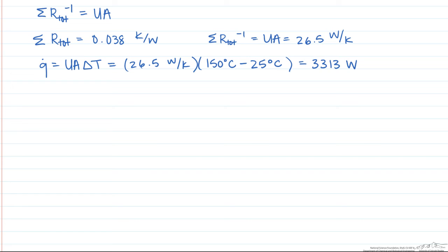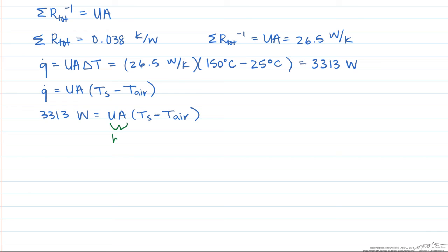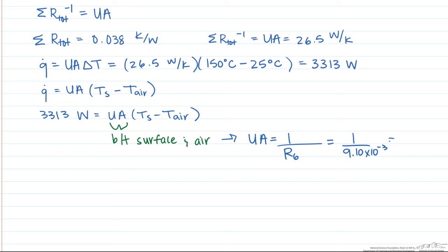To find the surface temperature, we go back to our governing equation where now the change in temperature is the surface temperature minus the temperature of the air. The Q stays constant at 3,313 watts. But this UA is only going to consist of the resistance between the surface and the air. So that UA is going to equal 1 over that resistance, giving UA equal to 110 watts per Kelvin.